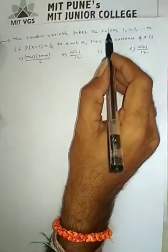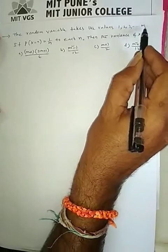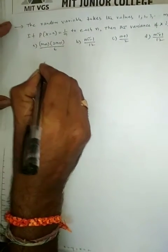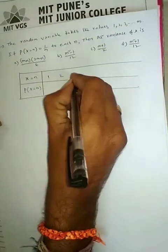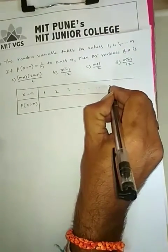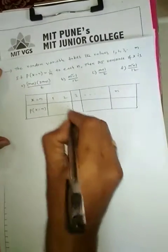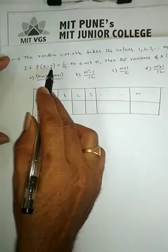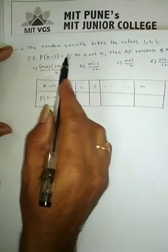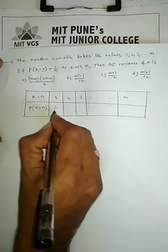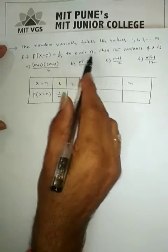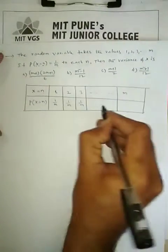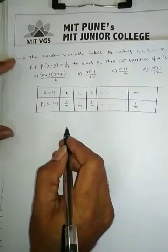First, the X values are 1, 2, 3, up to M. To make the probability table: X equals N and its probability value. X values are 1, 2, 3, up to M, and for each case, the probability is 1/M. For every value of N — 1, 2, 3, up to M — each probability value is 1/M. We require the variance of X.